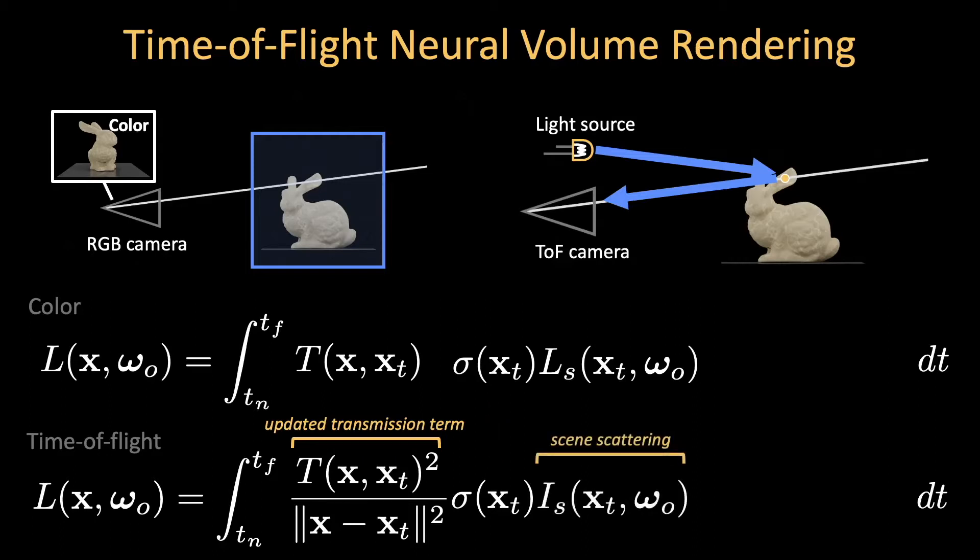The second difference is that the measured light now depends upon reflected radiant intensity scattered from the scene. Third, the contribution of light depends on a path length importance function w, which in turn depends on the distance traveled.